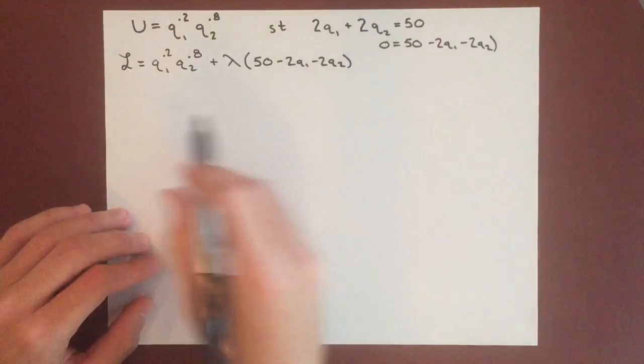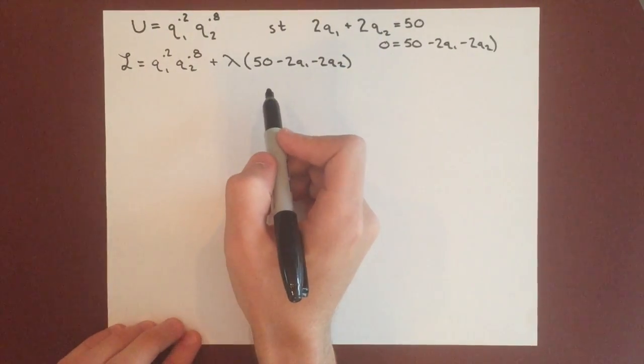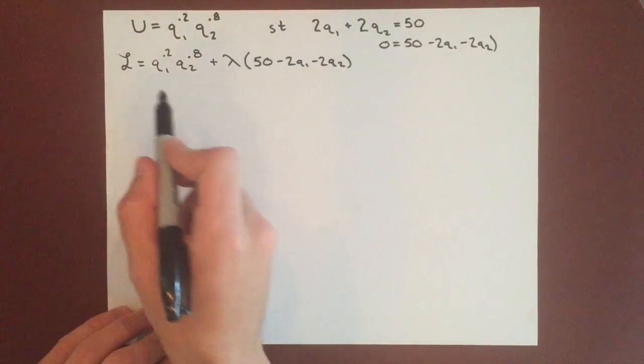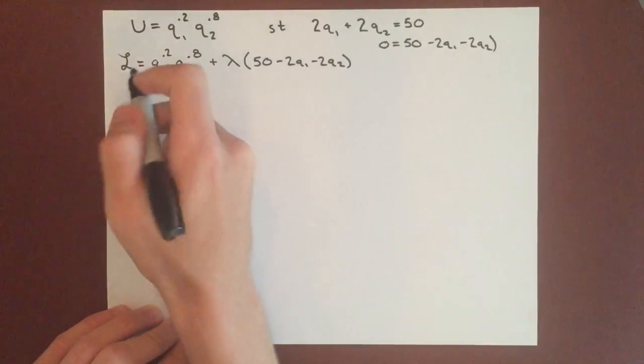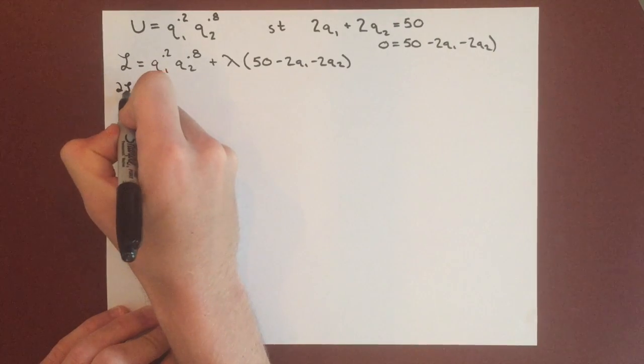And then we want to take the partial derivative of this Lagrange equation for q1, q2, and for lambda. So we'll start with q1.